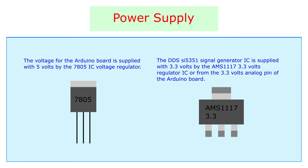5. Power supply. The voltage for the Arduino Nano is 5 volts and it is supplied by the 7805 IC voltage regulator. The direct digital synthesizer chip needs about 3.3 volts to operate, which is obtained from the 17th pin of the Arduino Nano board.